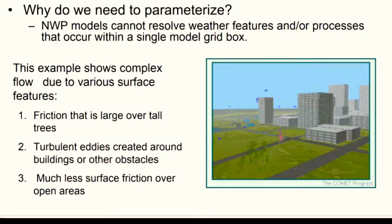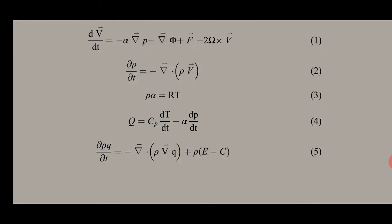Let us consider the mathematical expressions showing why parameterization is needed. As you already know, there are seven equations in a numerical weather prediction model. The first equation defines Newton's second law, or conservation of momentum. The second is the continuity equation, or conservation of mass. The third is the equation of state for an ideal gas. The fourth is the thermodynamic conservation of energy. Finally, there is the moisture equation.